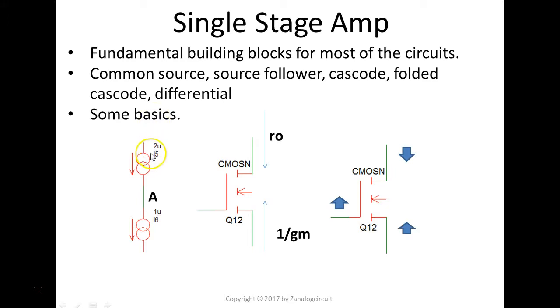Because what happened was, you have an ideal source on top that can support two microamps, but the bottom can only sink one microamp. Of course, the charge is going to accumulate at node A. That's the reason the node voltage is going to shoot up very high.